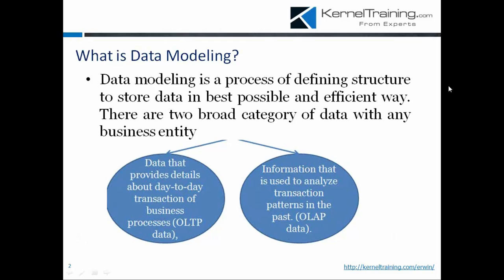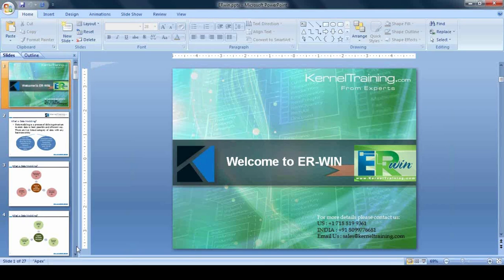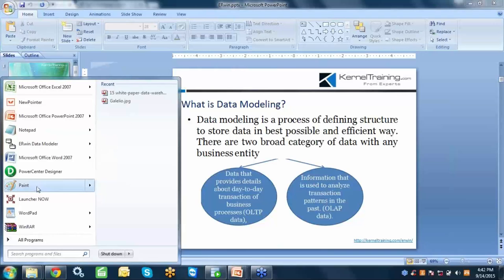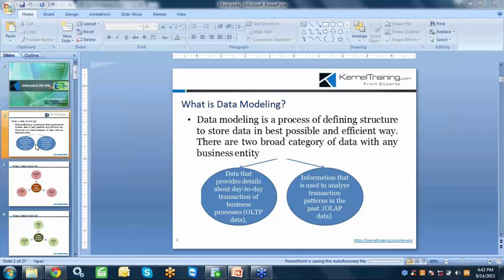Forward engineering, reverse engineering, and complete compare are the three basic requirements for database design and data modeling. Apart from designing in the tool, let me start the Erwin tool and show you how it works, including how forward and reverse engineering function. If you have any questions, you can interrupt me at any time — don't wait for the topic to be completed.